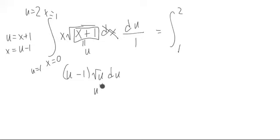This is u to the 1 half, and we can multiply, we can distribute it through u to the 3 halves minus u to the 1 half du. So u to the 3 halves minus u to the 1 half du.